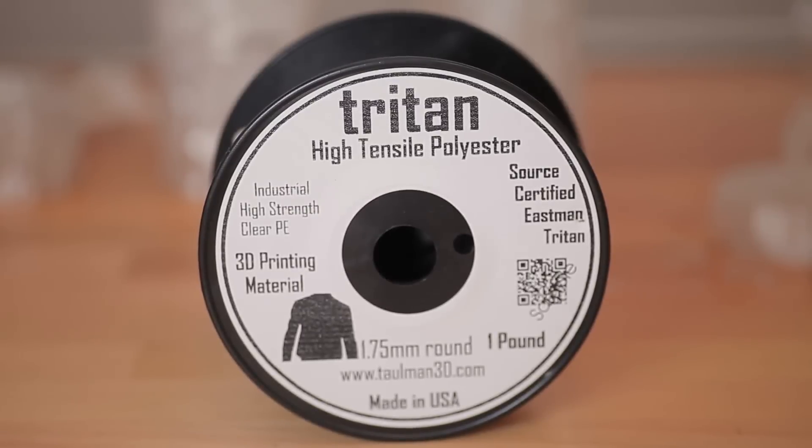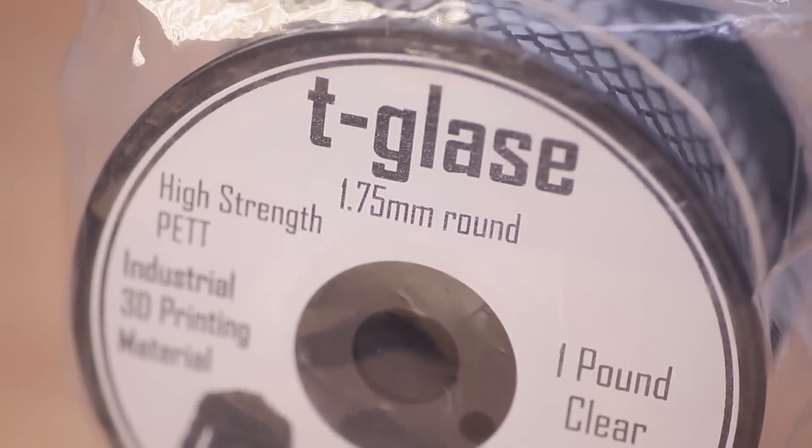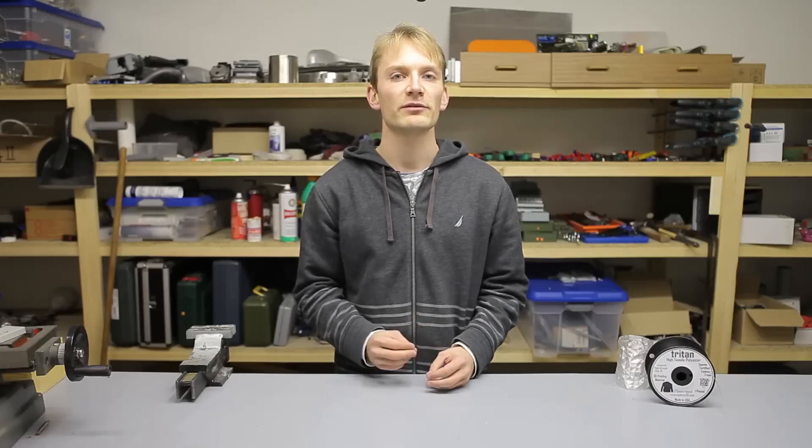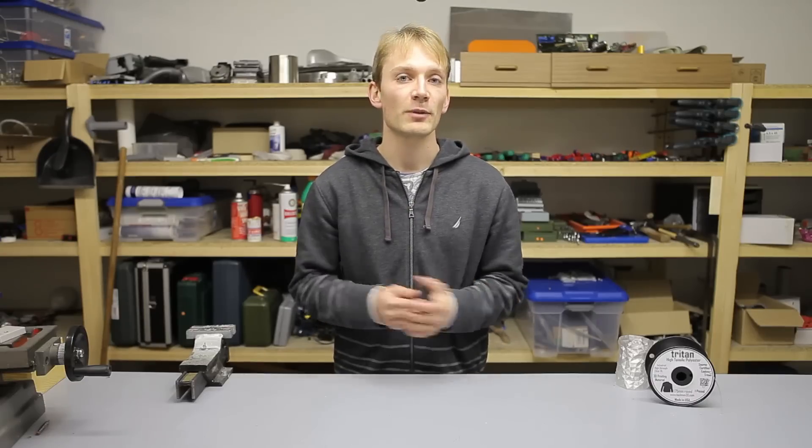Triton is another filament made by Tallman, who's probably best known for his nylon filaments and the polyester-based T-Glase. Recently he launched a Kickstarter campaign for a bunch of new filaments, which unfortunately didn't get funded, but Tallman decided to go through with bringing these filaments to market anyway, even if it meant smaller batch sizes and a slower release. And Triton is one of these filaments.